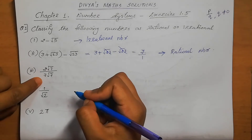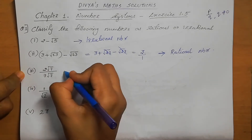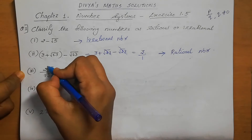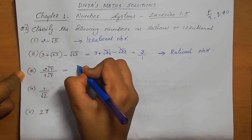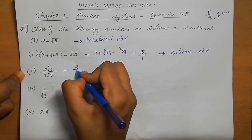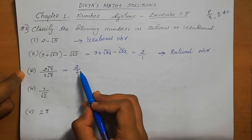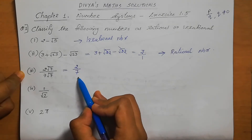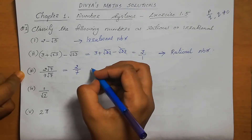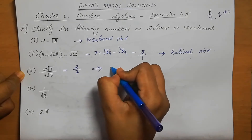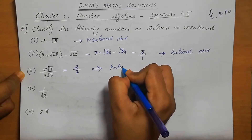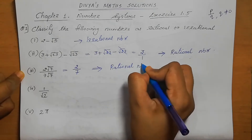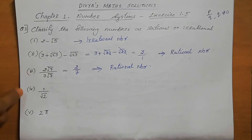Third one: 2 root 7 by 7 root 7. The root 7 in the numerator and root 7 in the denominator cancel, so we get the answer as 2 by 7. Both 2 and 7 are integers and 7 is not equal to 0, so this is a rational number.